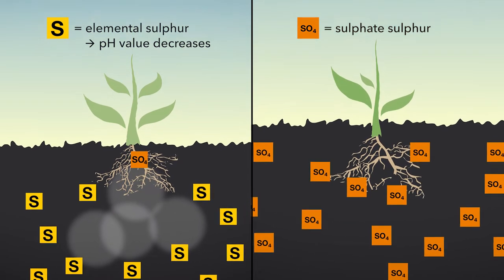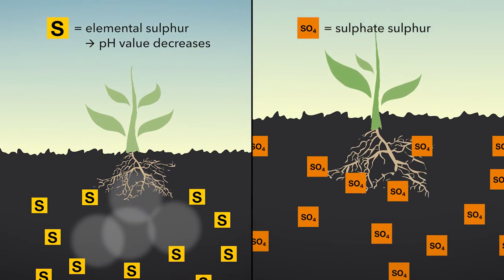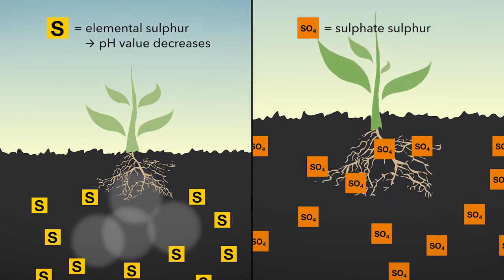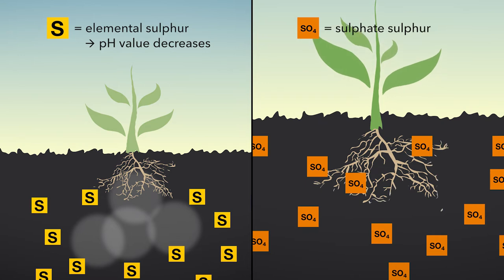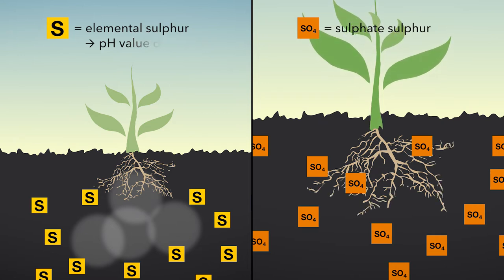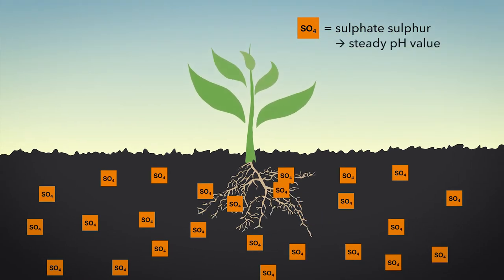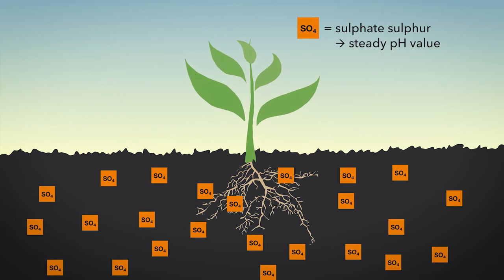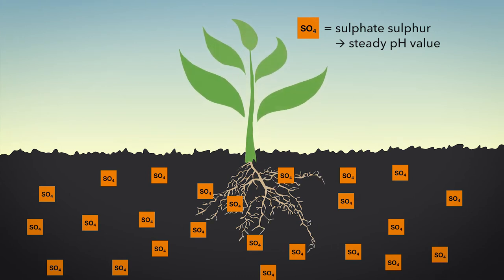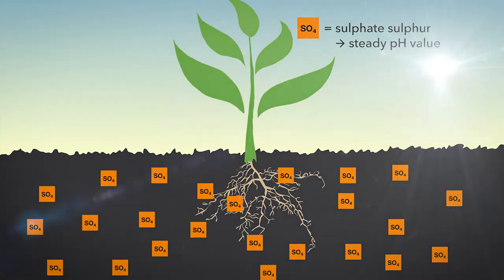Whenever sulfate is used as a fertilizer, the sulfur is in the correct form. It can be immediately absorbed by the roots and is thus available for several metabolic processes. Since no conversion takes place and no protons are released, sulfate is pH neutral.